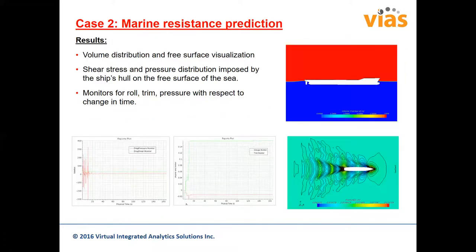Some results are shown here, with more information available in the published paper. We also ran this ourselves and achieved a solution with an error of only two percent with respect to measurements. This is a very good example of how a simple ship hull can be very well computed and used for design and optimization of hull performance. In this case, roll, trim, and resistance were all monitored together.